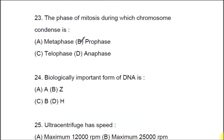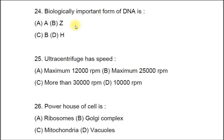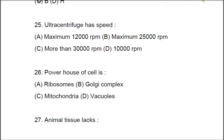Question 24: The biologically important form of DNA is A) Z-DNA, B) H-DNA, C) B-DNA. The correct answer is C, B-DNA. Question 25: An ultracentrifuge has a speed of A) maximum 12,000 RPM, B) maximum 25,000 RPM, C) more than 30,000 RPM, D) 10,000 RPM. The correct answer is C, more than 30,000 RPM.